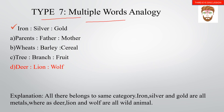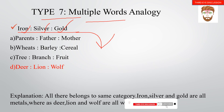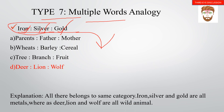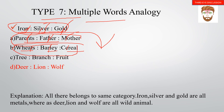Type 7 is multiple words analogy. For example: iron, silver, gold — these are all metals. Another example: parents, father, mother — they are all related. Or tree, branch, fruit — all three are parts related to a tree. All three words belong to the same group or category.